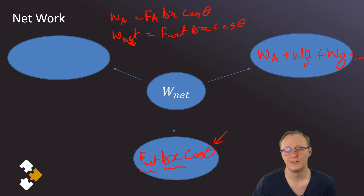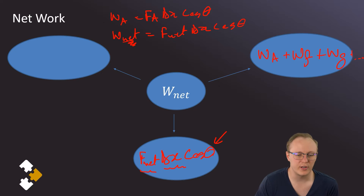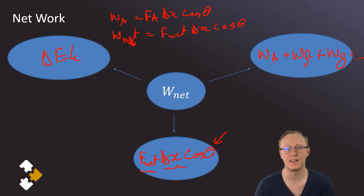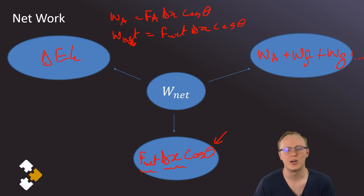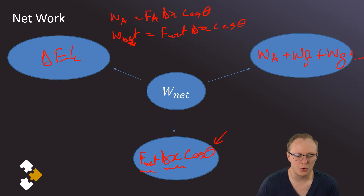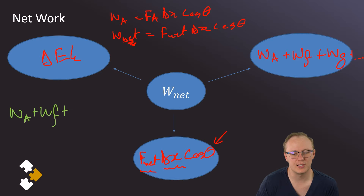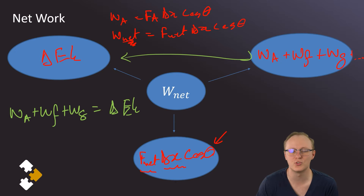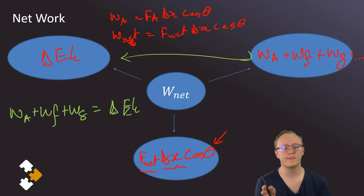The third way to find net work is through the work-energy theorem, which tells us that the net work done on an object equals its change in kinetic energy. Because all these expressions equal net work, we can equate them. So a very useful equation is: W_applied + W_friction + W_gravity = ΔEk. That's what you get by combining the two approaches since they're both equal to net work.